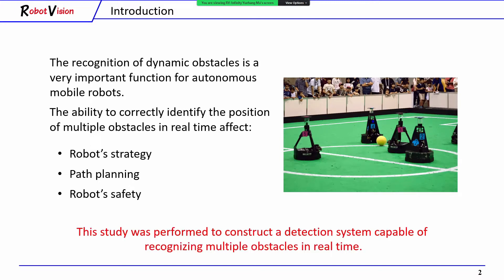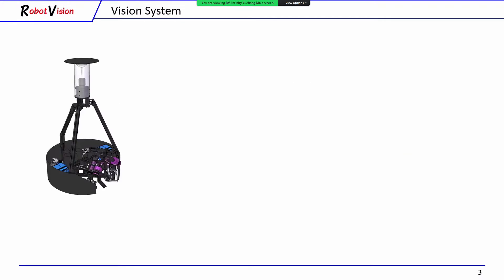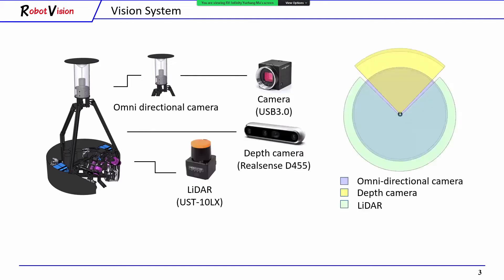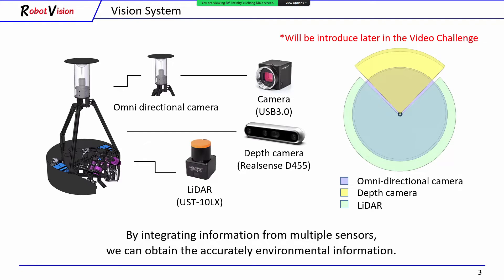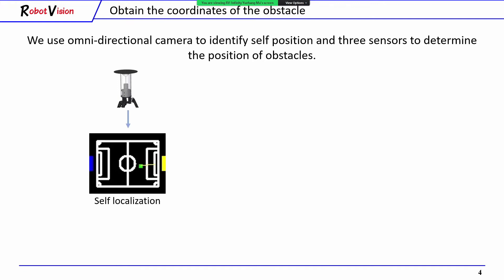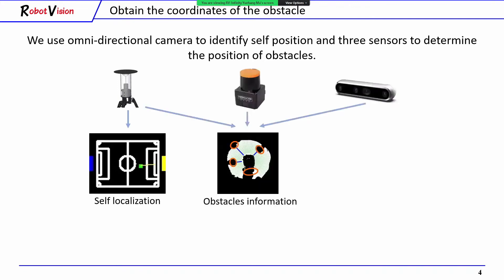This study was performed to construct a detection system capable of recognizing multiple obstacles in real-time. About our vision system, we use an omnidirectional camera, a depth camera, and a LIDAR to get environment information. We will introduce the sensor details later in the video challenge. By integrating information from multiple sensors, we can obtain auxiliary environment information, and use the omnidirectional camera to identify self-position, and three sensors to determine the position of obstacles.